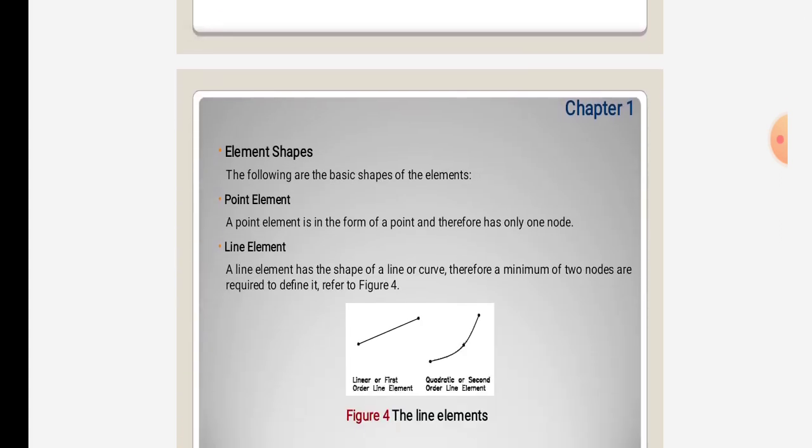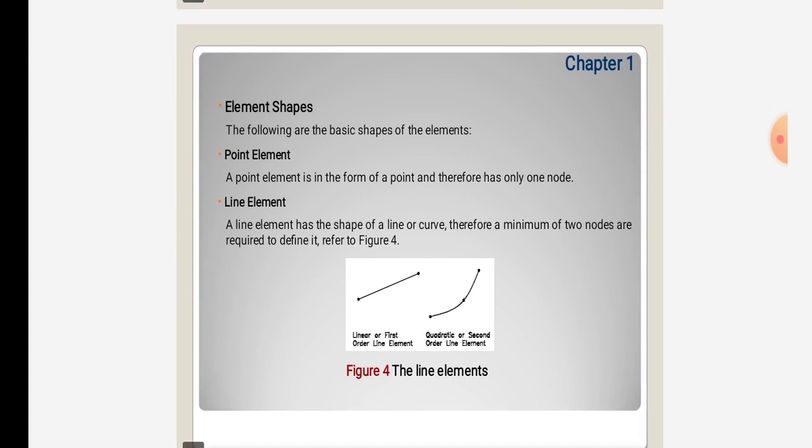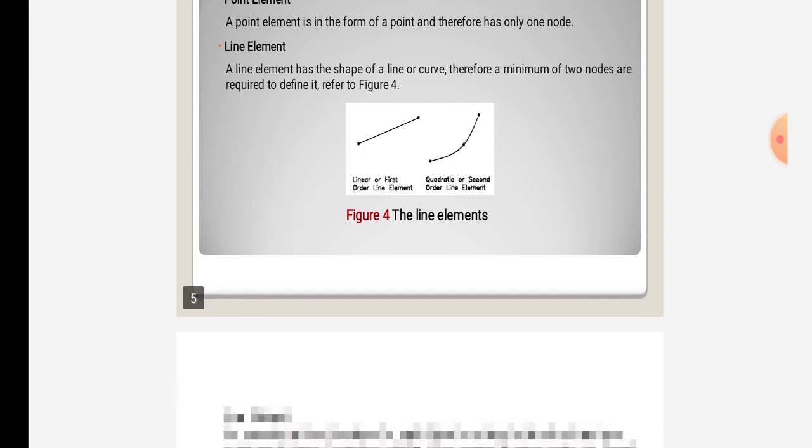A point element is in the form of a point and therefore has only one node. A line element has the shape of a line or curve. Therefore, a minimum of two nodes are required to define it, as shown in Figure 4.